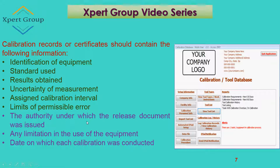The certificate should also include the authority under which the release document was issued, any limitations in the use of the equipment, and the date on which each calibration was conducted. All of this information should be available in the records or certificates related to calibration.